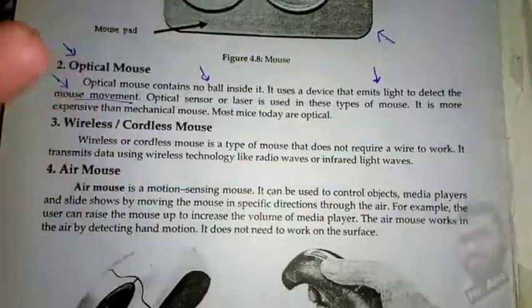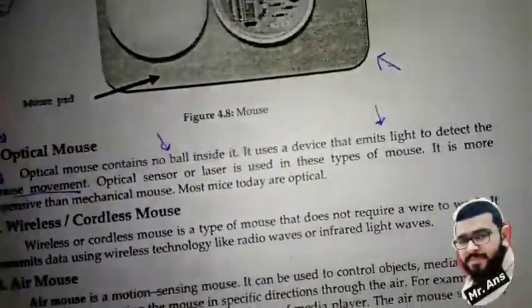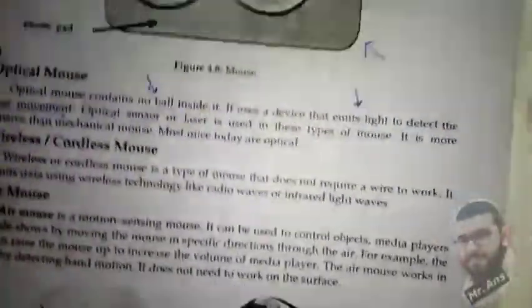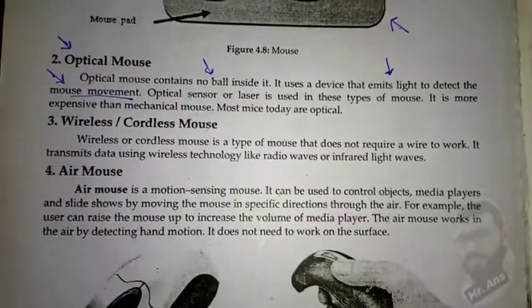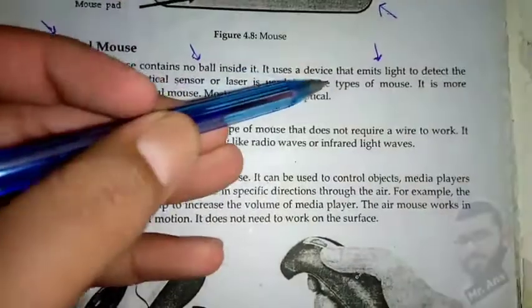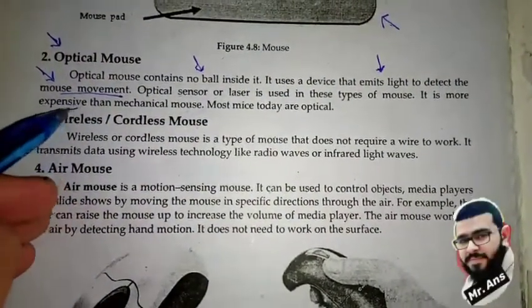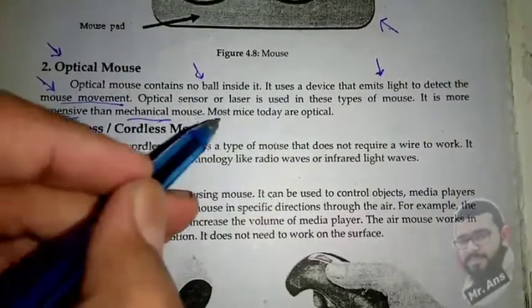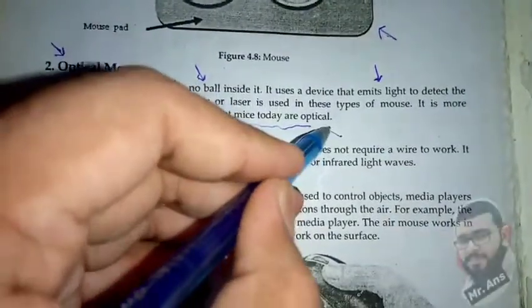You can see the light under the mouse — for example, I have this optical mouse here, and this is the light you can see. An optical sensor or laser is used in this type of mouse. It is more expensive than the mechanical mouse, and most mouses today are optical.